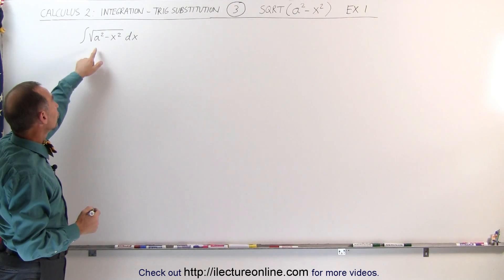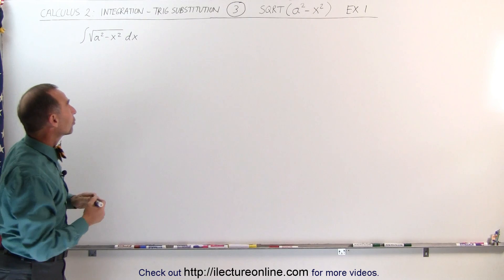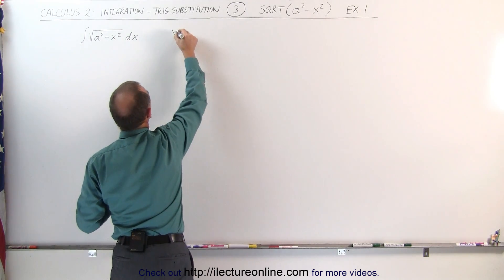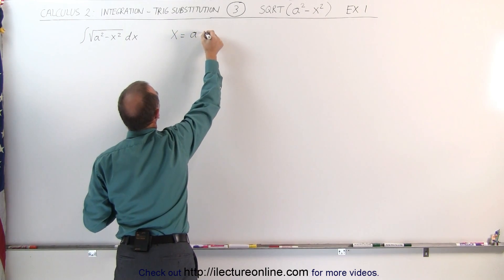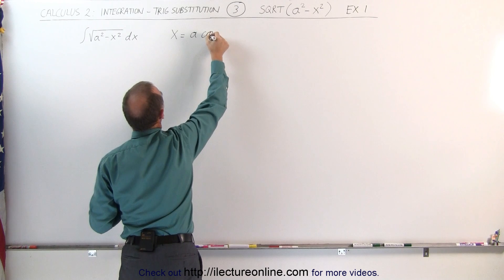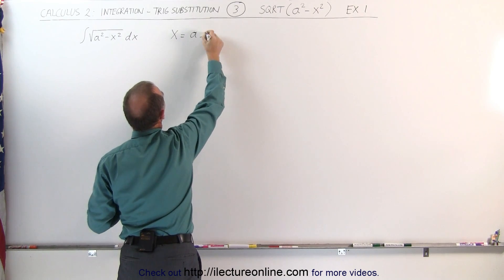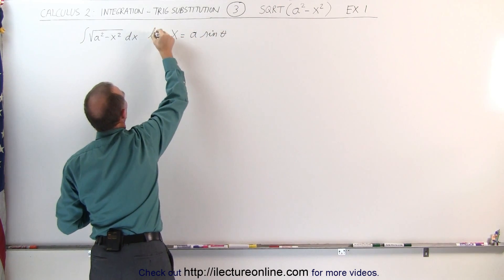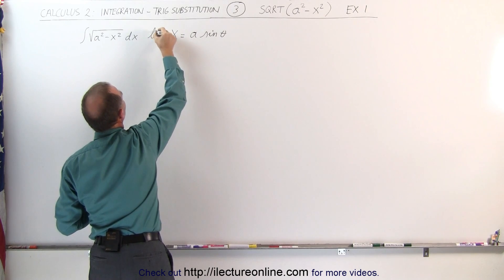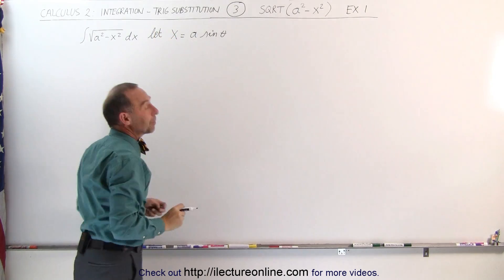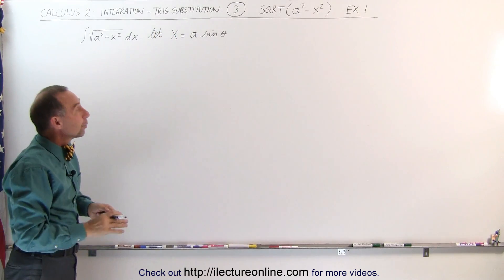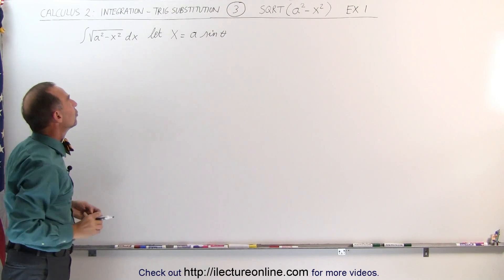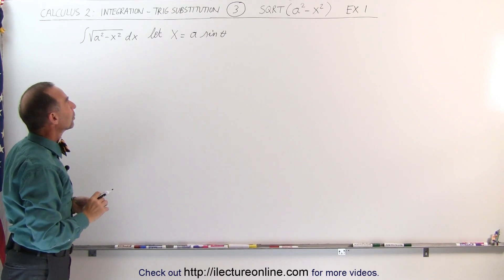The substitution you need to use for the square root of a squared minus x squared is always going to be x equal to a times the sine of theta. Let's write 'let x equal' that, because of course it's not literally equal to that — we're just going to let it equal that and then substitute it into the integral.